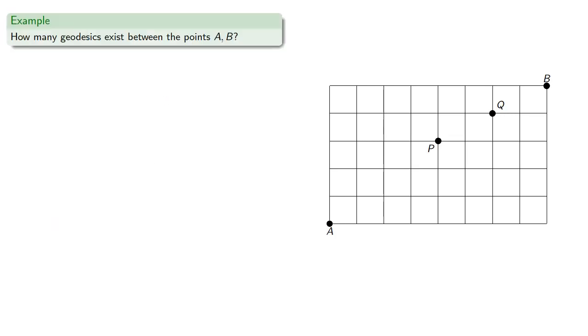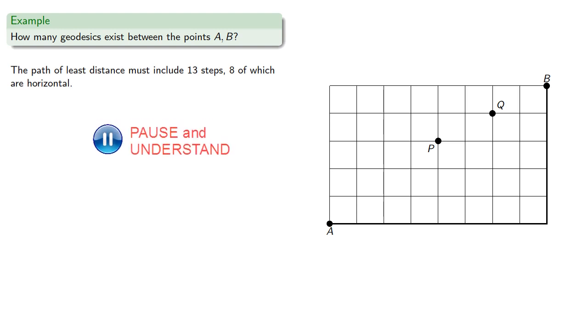So let's try to find the number of geodesics between the points A and B. We might begin by noting that the path of least distance includes thirteen steps, eight of which are horizontal. So there are thirteen choose eight geodesics between the two points.